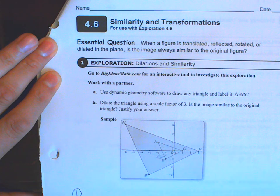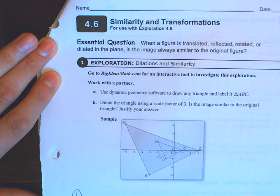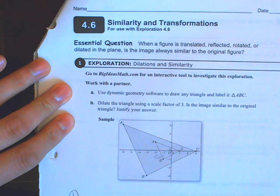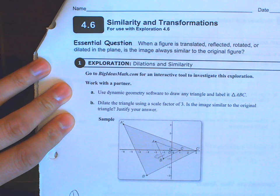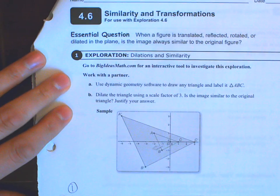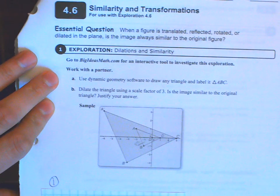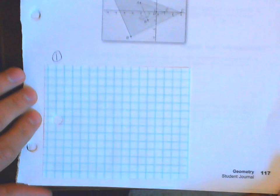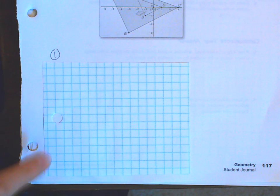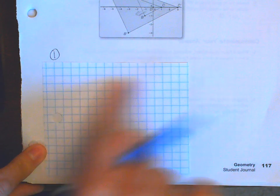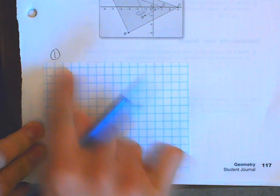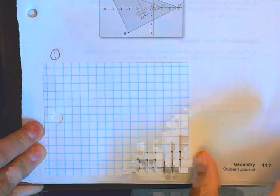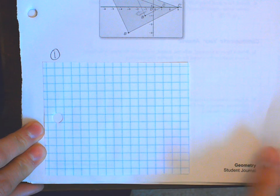Hi, welcome to lesson 4.6, Similarity and Transformations. In your journal, this is on page 117. At the bottom of page 117, please make sure you glue a piece of graph paper — that's going to be for problem number one. Pause the video and start when you're ready.